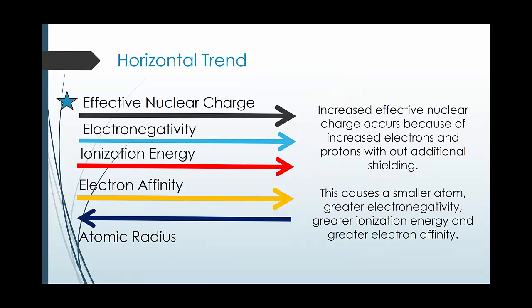Let's start with the horizontal trends. The horizontal trends all arise from one basic trend, and that is your effective nuclear charge. As you go to the right, your effective nuclear charge increases. And this is because your protons and electrons increase, but you do not increase your energy shells, which means that you don't increase shielding.